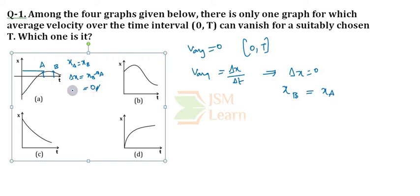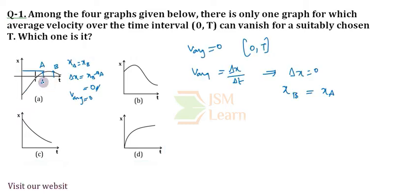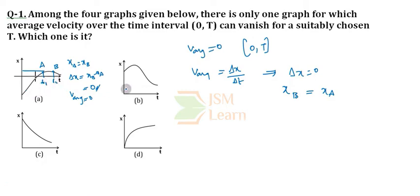Since the total displacement is 0, V average is becoming 0 in this case. But we need V average equal to 0 in the 0 to T time interval. Let us check the time interval — is this happening in the 0 to T time interval? No. We can observe that it is happening in some time interval T1 to T2. So Option A is incorrect.